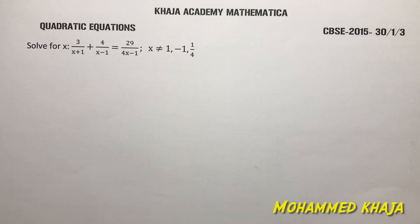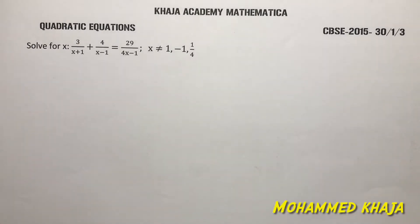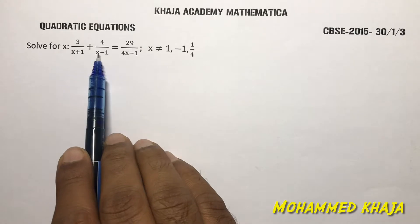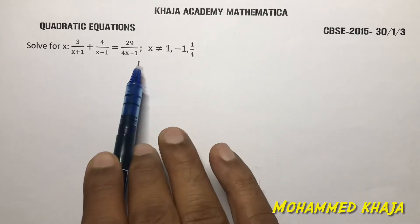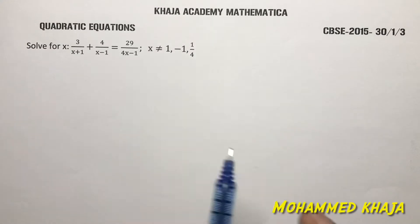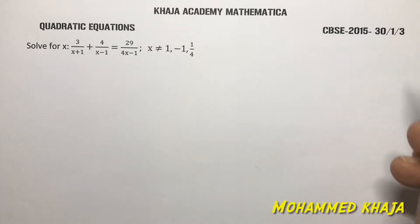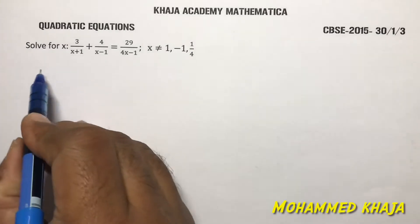Solve for x: 3/(x+1) + 4/(x-1) = 29/(4x-1), where x is not equal to 1, x is not equal to -1, and x is not equal to 1/4. These values are excluded because they make the denominators zero, making the expression undefined. This question was asked in CBSE 2015, Set 3.